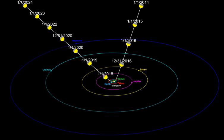A more recent estimate by David C. Jewitt and colleagues, following the detection of 'Oumuamua, predicts that the steady-state population of similar, approximately 100-metre scale interstellar objects inside the orbit of Neptune is approximately 1 × 10⁴, each with a residence time of approximately 10 years.